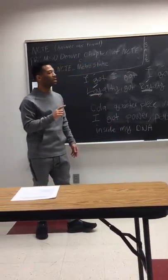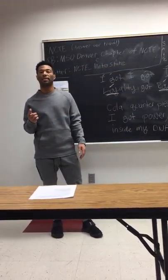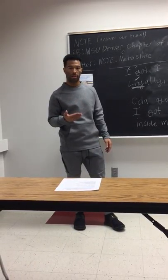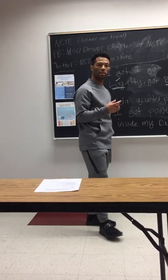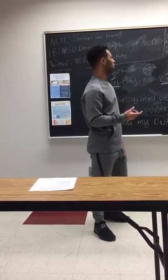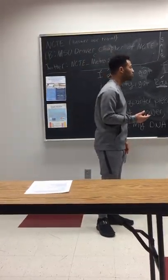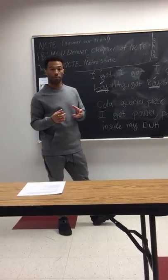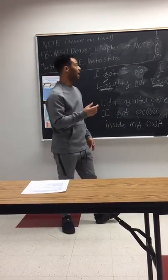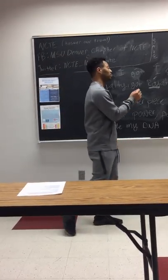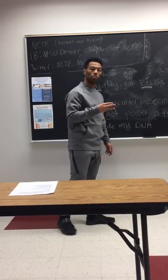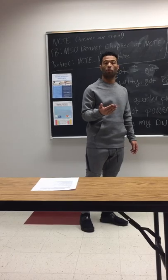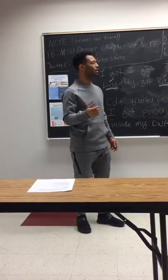Rule number one is all multi-syllable words have accented and unaccented syllables. The accented syllable is where we put the stress; the unaccented syllable is a little less pronounced. Rule number two: on all nouns in a multi-syllable word, the accent comes at the beginning of the word. And rule number three is in verbs, the accent comes at the end of the word — we're placing the stress at the end.